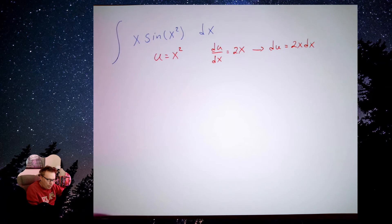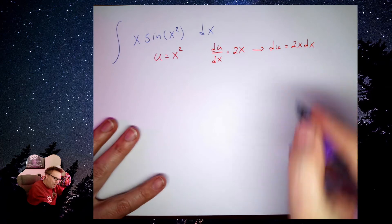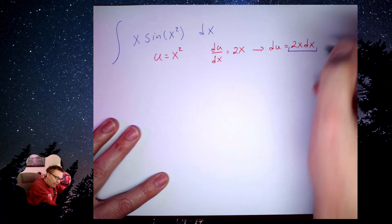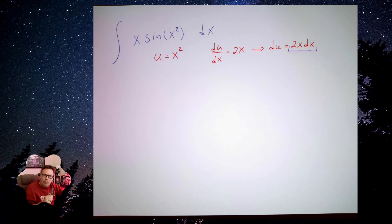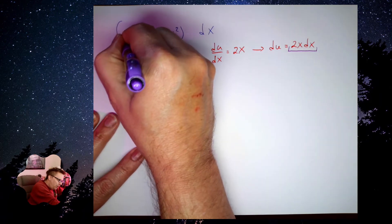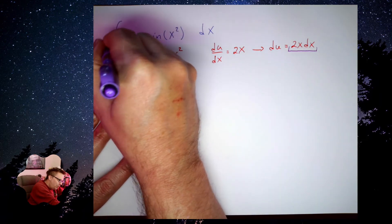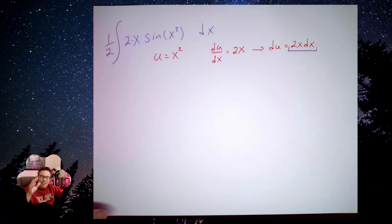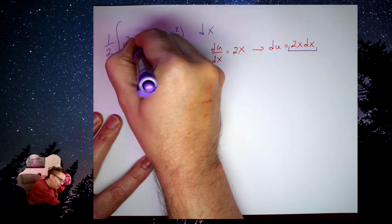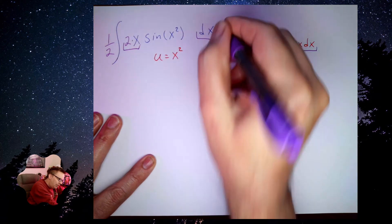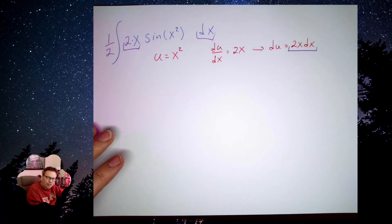Now what I want you to notice here is that I don't quite have a 2x dx in here. I have an x dx. So what I'm going to do, one of the properties of integration, is this constant multiplier rule. I'm going to multiply by 2 on the inside, but multiply by a half on the outside. That's like multiplying by 1. And now, I have the appropriate substitutions.